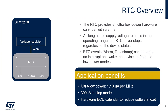Let's look at an overview of the RTC. The RTC peripheral features an ultra low power calendar and alarm which runs in sleep and stop mode. We will use the RTC alarm to wake up from stop mode in this lab. The RTC consumes only 1.13 microamp per megahertz. The calendar is provided in BCD (binary coded decimal) format, which reduces software load when displaying date and time.